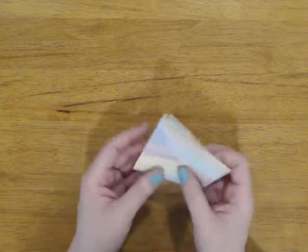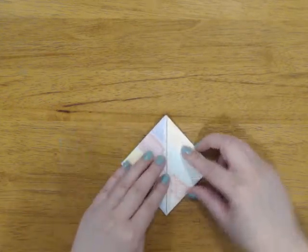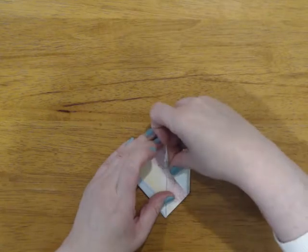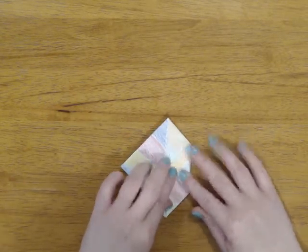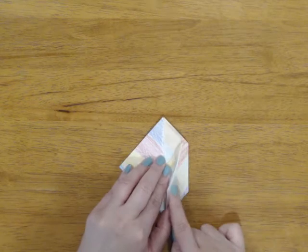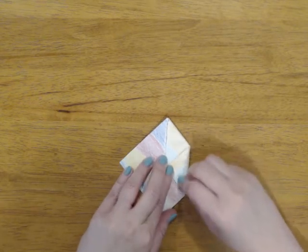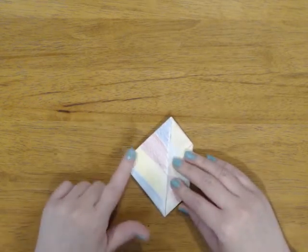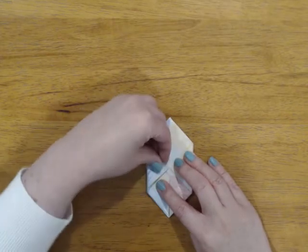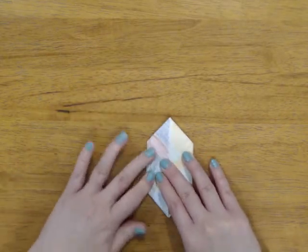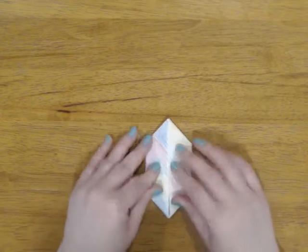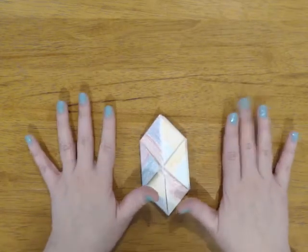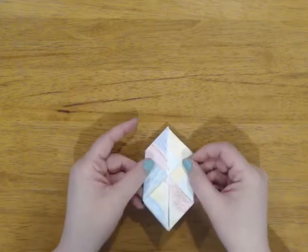And now guess what? We're gonna turn it over. And we're gonna do the same thing on this side. Kind of fold that edge in to the middle. You see how that lines up with the one underneath. And now one more. Excellent. All right. We are almost there. That's kind of a little diamond shape.